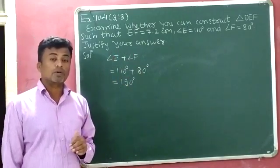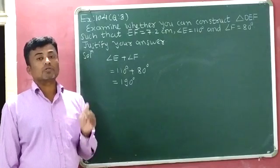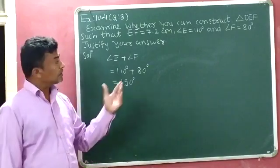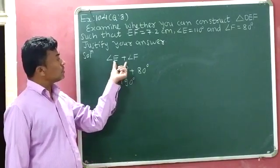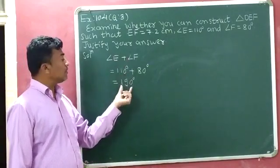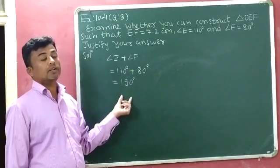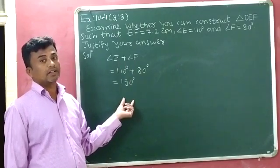What is the angle sum property? The sum of all three angles of a triangle is 180 degrees. But see children, here the sum of just 2 angles is 190 degrees, which is already more than 180 degrees.